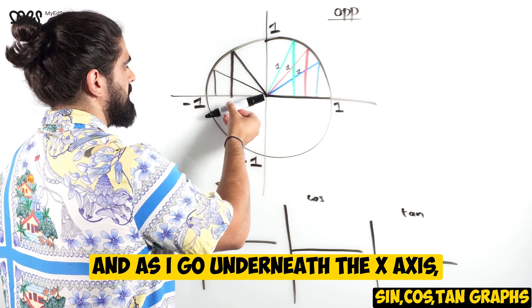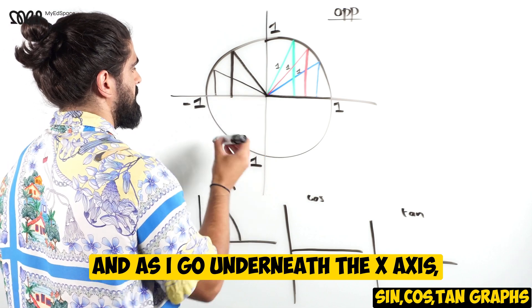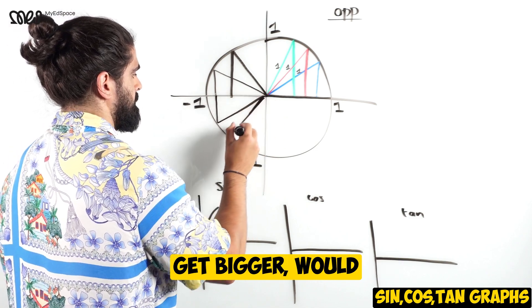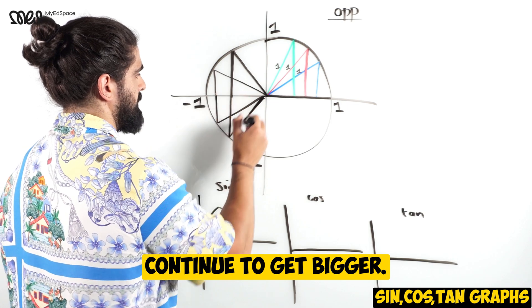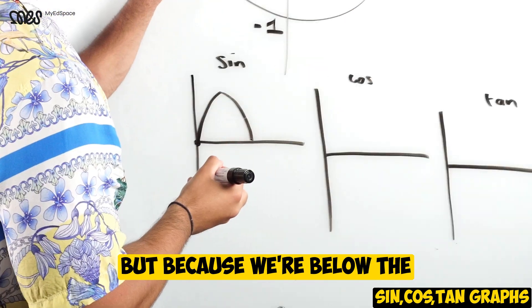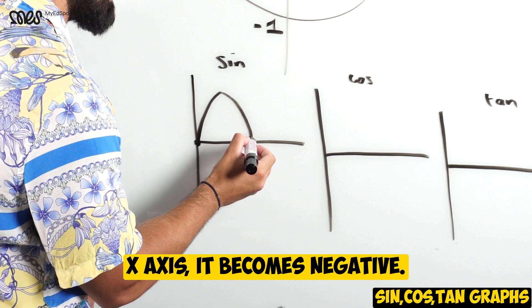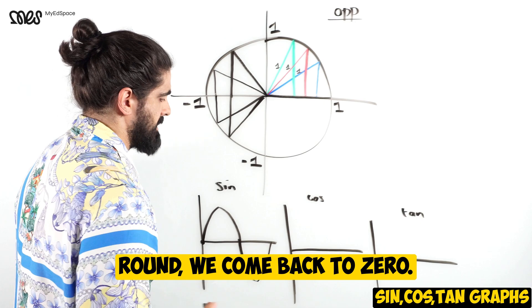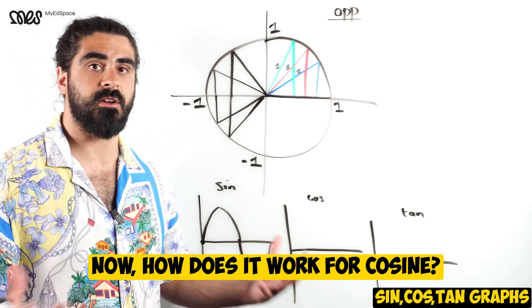As I go underneath the x axis, the opposite side would continue to get bigger. But because we're below the x axis, it becomes negative. And then again, as we go back round, we come back to zero.